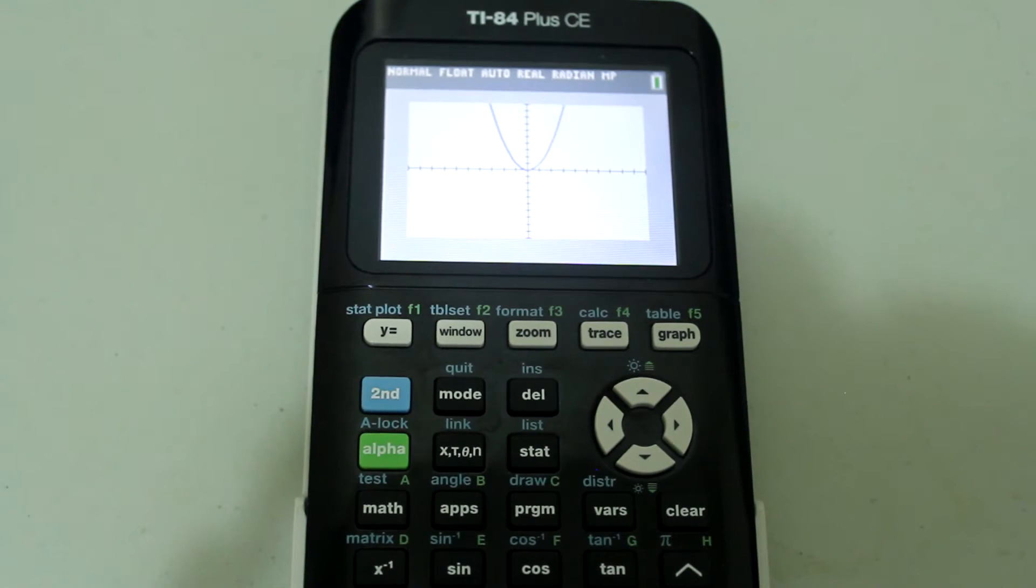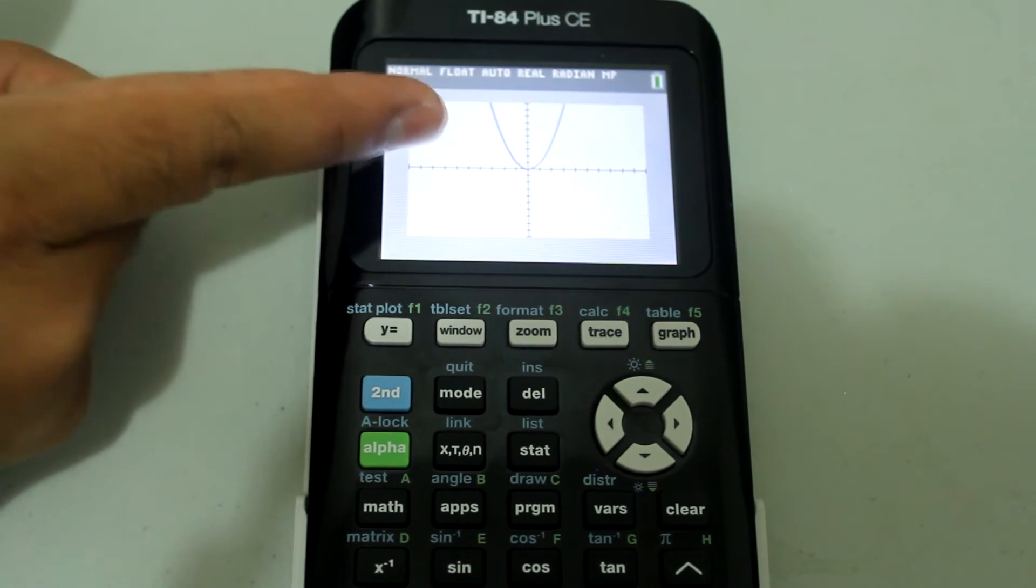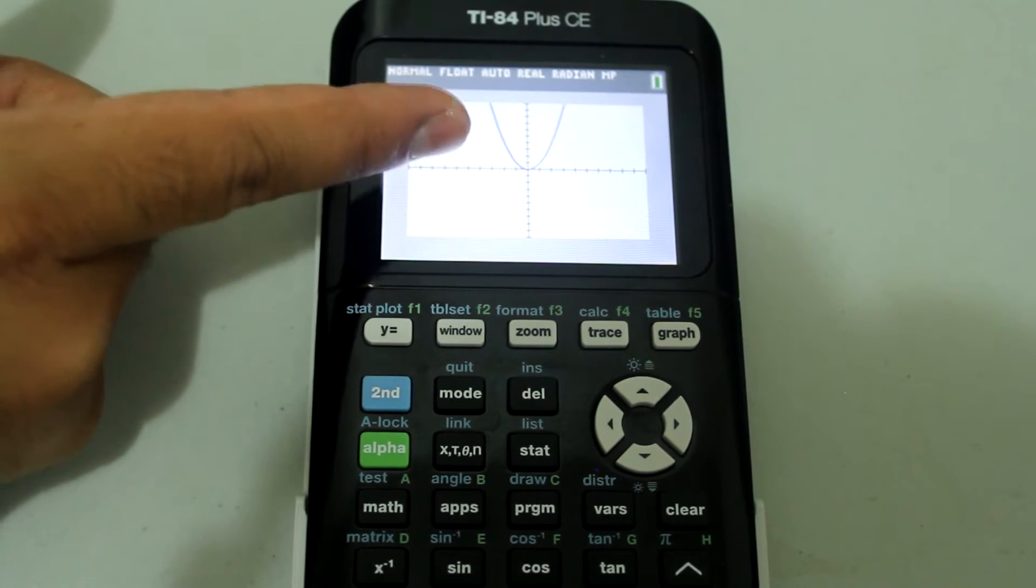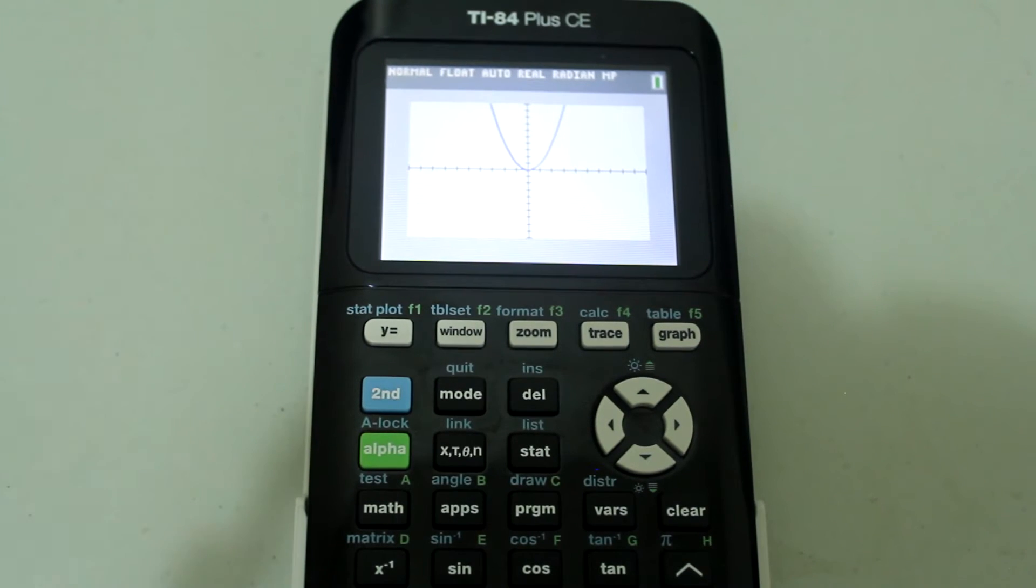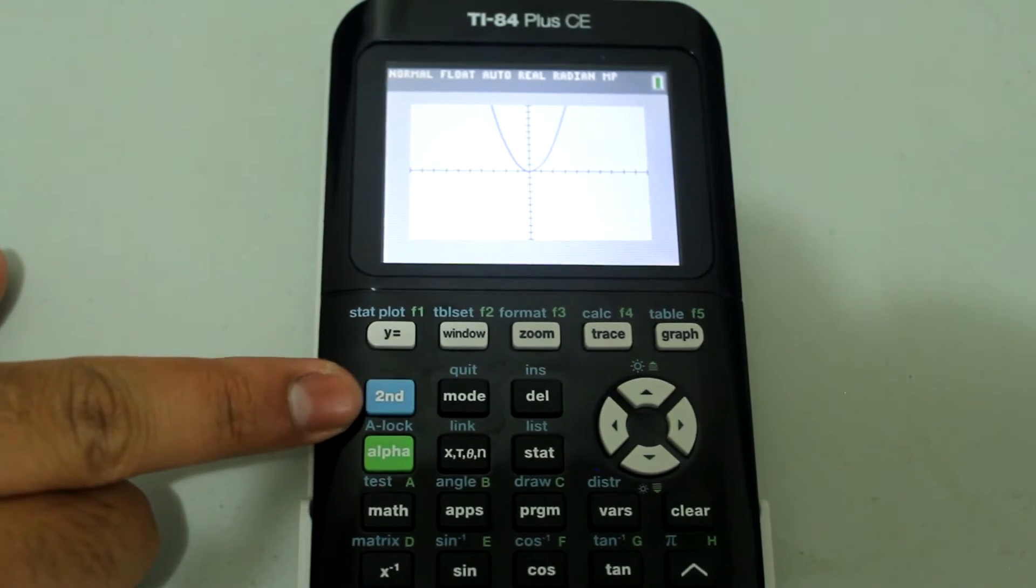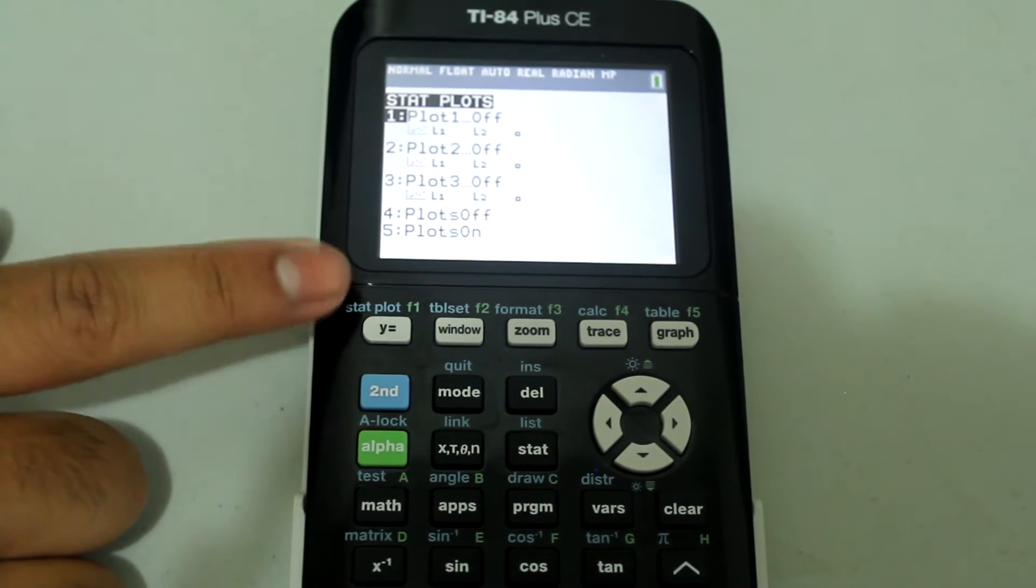It is worth mentioning that if I had numbers or data points for plot 1, it would graph those points in the graph instead of giving me the error message. For example, let's go to second y equals to choose stat plot.